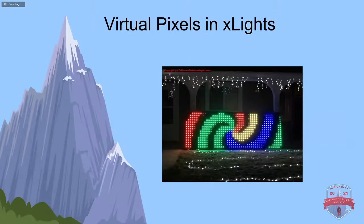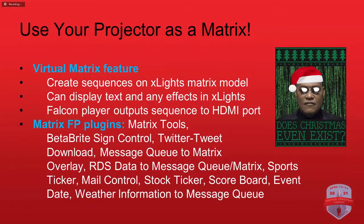For virtual pixels on your projector screen: in xLights, create a matrix model and define the X and Y pixel dimensions. Set up a matching matrix in Falcon Player under Input/Output > Channel Outputs > Other, defining the virtual matrix type, channels, height, and width. Don't use high resolution — viewers are watching from the roadside and won't see fine pixel detail, and high resolution makes your FSEQ files huge and slows rendering. I use something around 176 pixels wide and a proportional height — not very high resolution, but it works well.